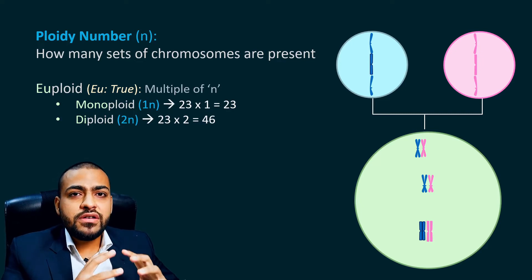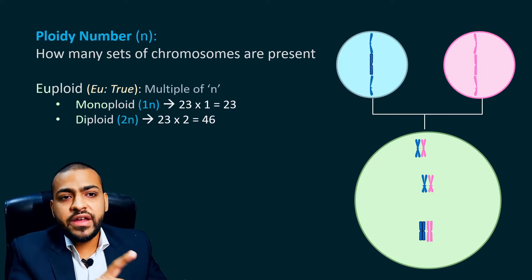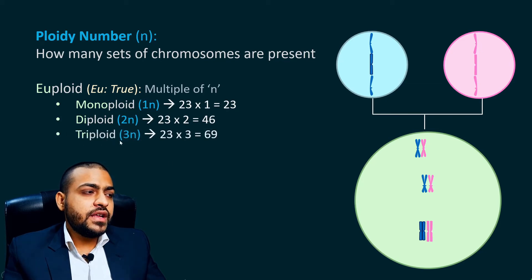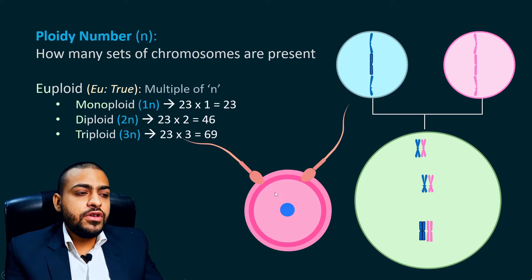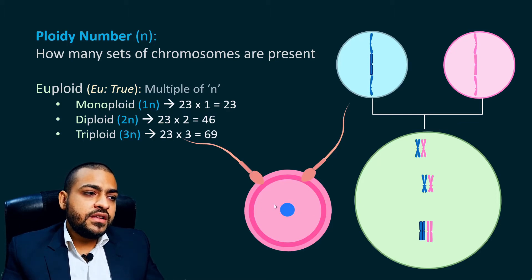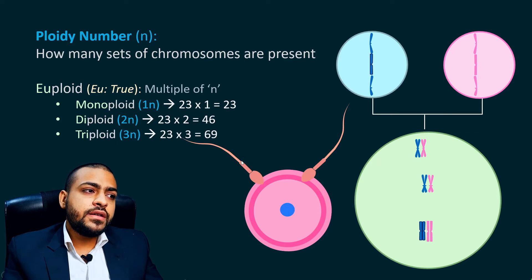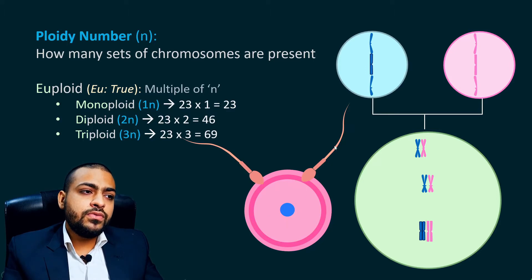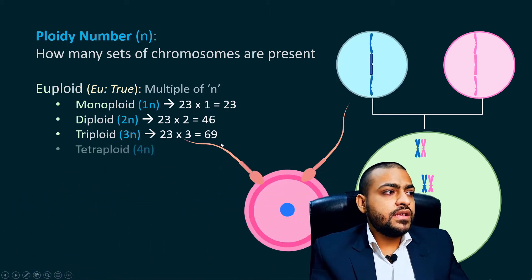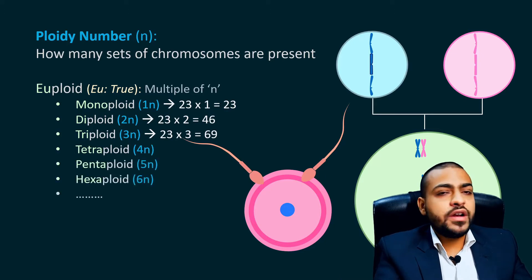These are two related concepts but you should not confuse them — they are different terms but very related to each other. Then there is triploid, whose ploidy number is 3n (23 multiplied by 3). An example related to humans is when an ovum is fertilized by more than one sperm — sometimes two sperm may fertilize it. Each sperm contains 23 chromosomes, and the ovum also has 23, so 23 × 3. That gives triploid. And then there could be tetraploid, pentaploid, hexaploid, and so on.